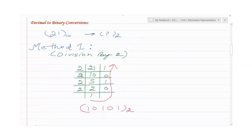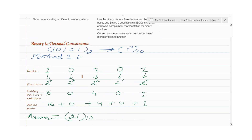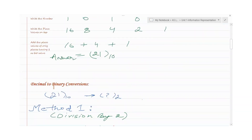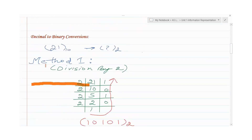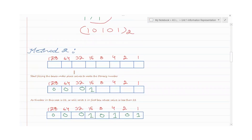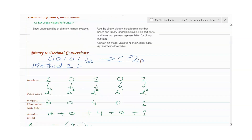That's all for today. We've covered binary to decimal conversion using two methods, and decimal to binary conversion also using two methods — one where we divide by 2, and one where we fill boxes under their place values.